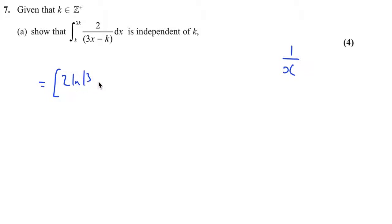So we can integrate this straight away. It's going to be two times the natural log of 3x minus k divided by three. That's between 3k and k. If we start putting the values in, we're going to get two over three natural log of 9k take k, so that's going to be 8k. And when we put k in, we're going to get two thirds natural log of 3k take k, so that's 2k.